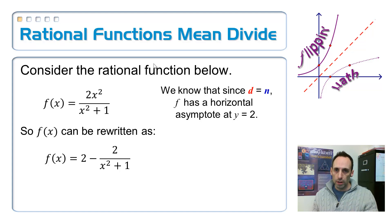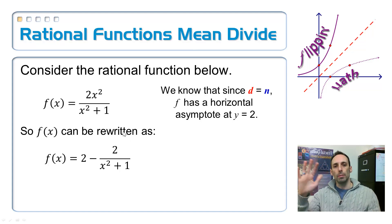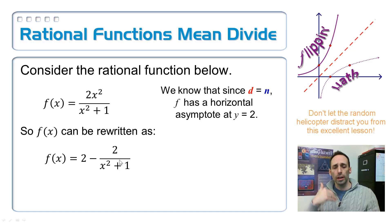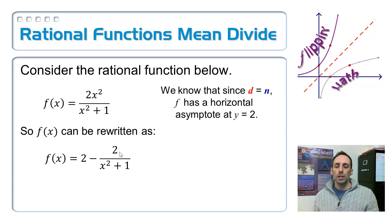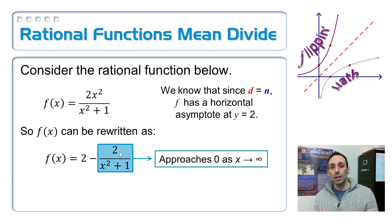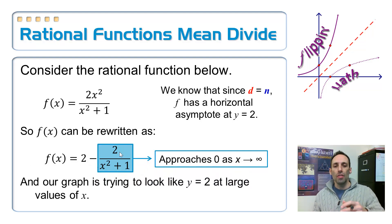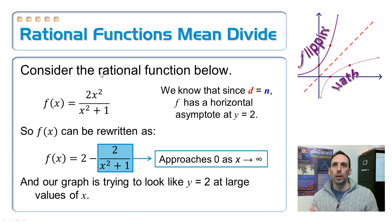Looking at the second form: 2 minus 2/(x² + 1). Consider the fraction part - the 2 on top stays the same, and on the bottom we have x² + 1. As x gets bigger and bigger, the 2 stays the same but the denominator becomes a really big number, so that whole fraction quantity is approaching zero. The entire function is therefore trying to look like f(x) = 2, or y = 2. And that's exactly what our horizontal asymptote is.